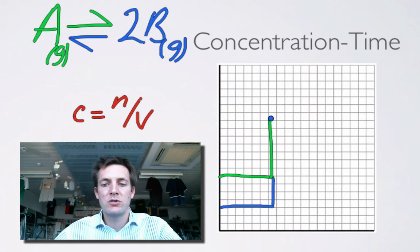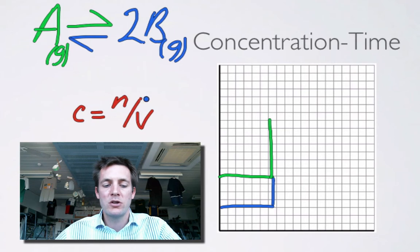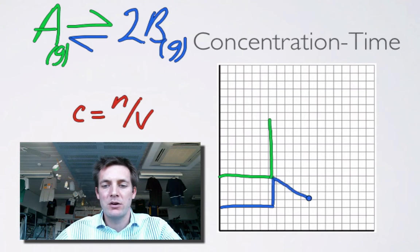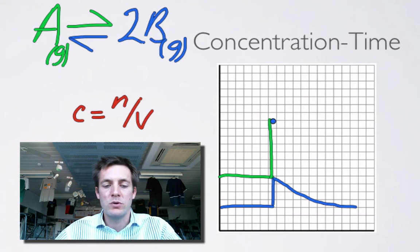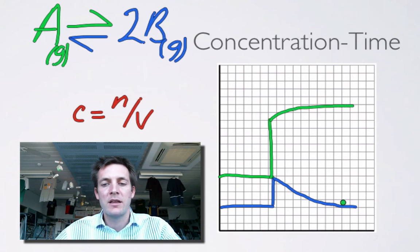What's going to happen to these two concentrations as the system returns to equilibrium? Le Chatelier's principle says we're going to the left to try and reduce the pressure. So the concentration of A is going to keep increasing, and the concentration of B is going to fall. The concentration of B isn't allowed to go back below its original level. We've got a mole ratio here — B has fallen by three or four squares, and because there are two moles of B and only one of A, then A will only be able to increase by about two squares. When they level off again, the system is back at equilibrium.